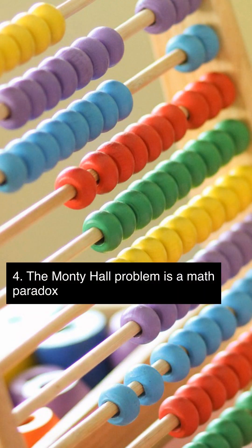The Monty Hall problem, a famous math paradox, states that when given a choice between three doors, one with a prize behind it and the other two with nothing, switching your choice after one of the non-prize doors is revealed gives you a higher chance of winning.